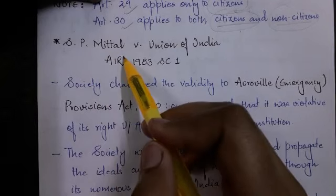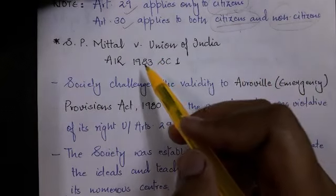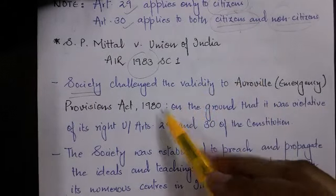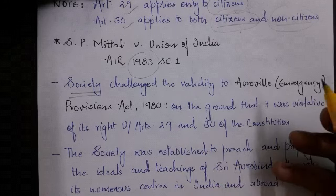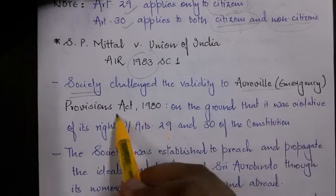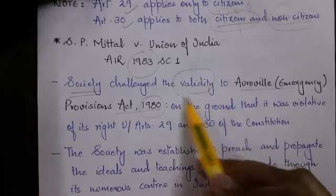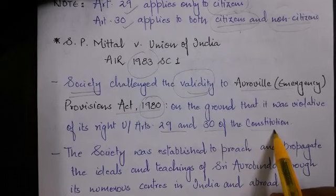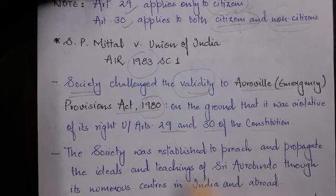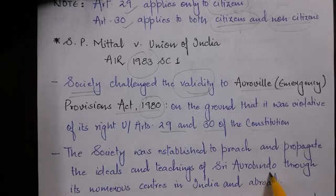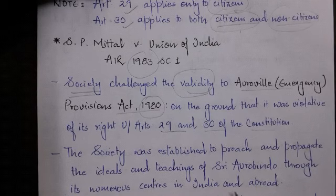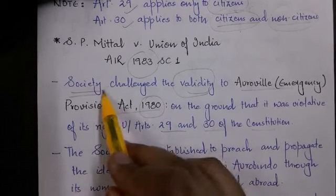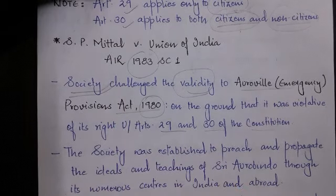That case is S.P. Mittal versus Union of India, 1983. In this case, an Aurobindo society challenged the validity of the Auroville Emergency Provisions Act of the year 1980, saying that it was violative of its rights under Article 29 and 30 of the Constitution. The society was established to preach and propagate the ideas and teachings of Sri Aurobindo through its numerous centers in India and abroad.